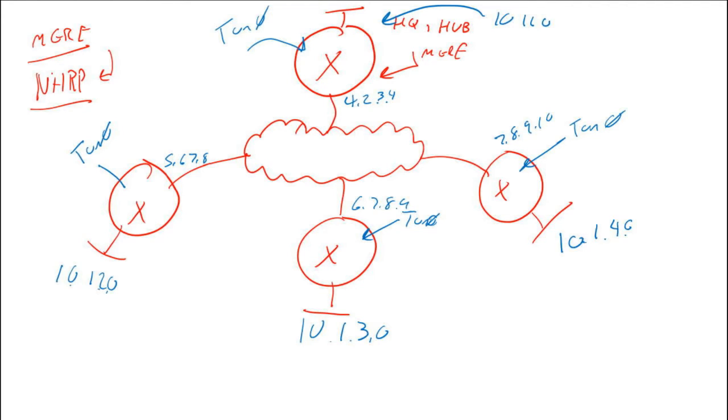What Next Hop Resolution Protocol does when each of these devices comes online: these spoke sites can have dynamic addresses on their physical interface. DHCP comes from the provider. When the site first comes online, the router boots up. The fact that we have this tunnel interface and the fact that we have it configured for Next Hop Resolution Protocol means that as soon as a router boots, he sees this interface, he initializes it with the configuration.